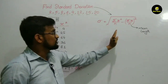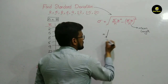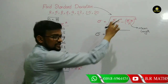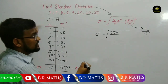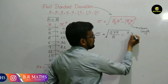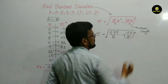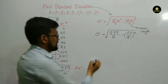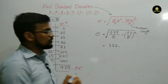Now put these values into the formula and find the result. Square root of: (summation x² / n) minus (summation x / n) whole square. That gives us: square root of (979 / 8) minus (77 / 8) whole square. Calculate 979 divided by 8, which equals 122.375.